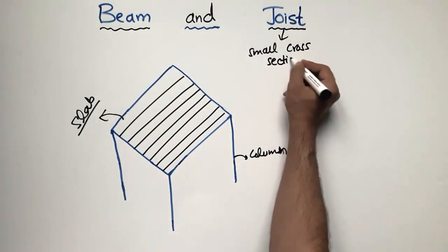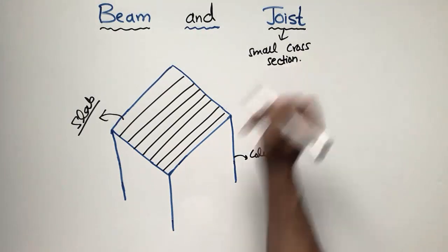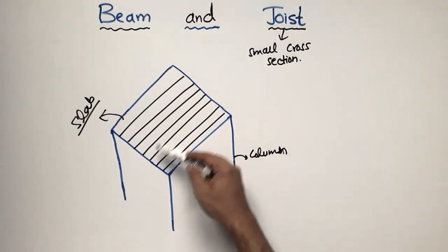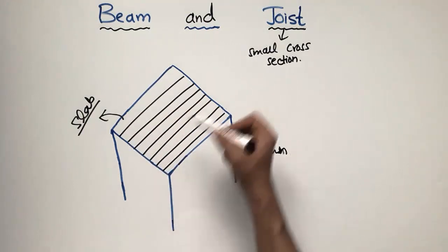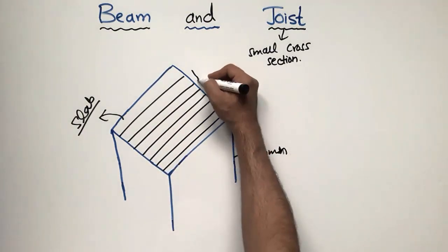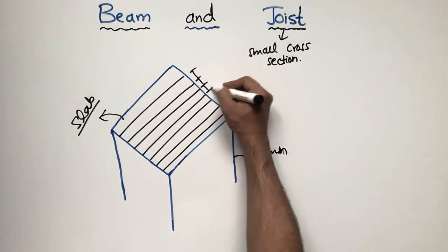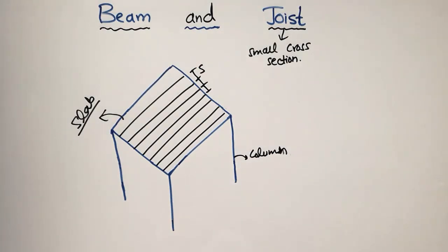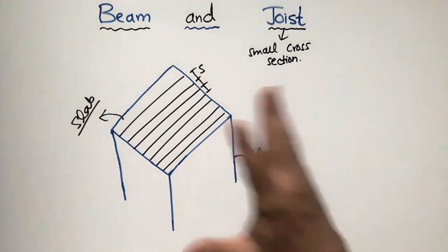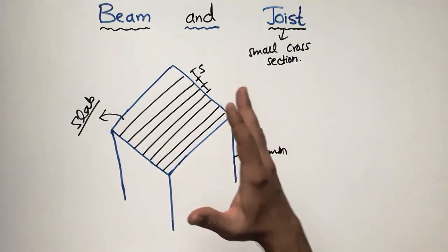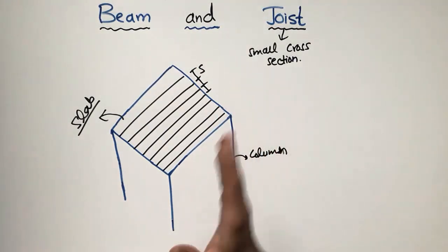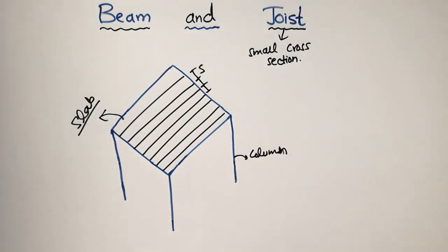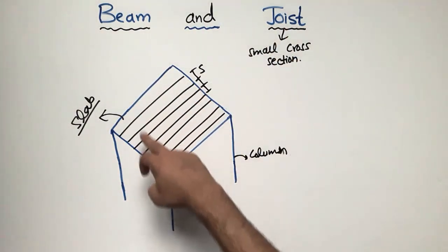Joists have a small cross-section, not like beams, while beams have a big cross-section. You can see here they are provided throughout the length of the slab with small spacing between them. They are mostly provided in long span buildings where you don't want to place a column in the center.